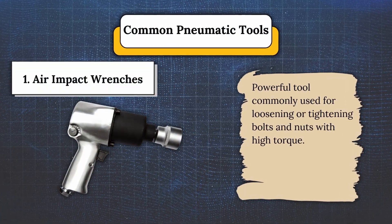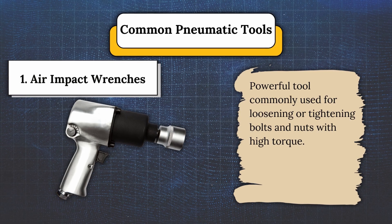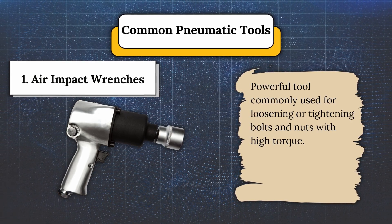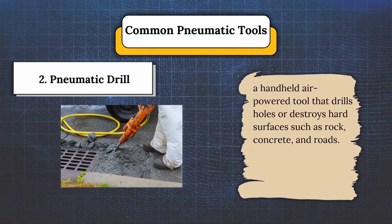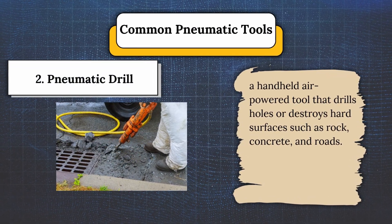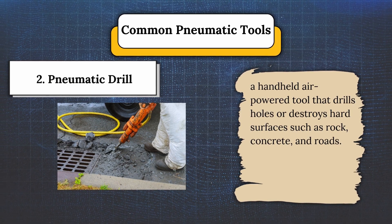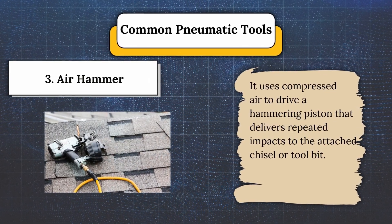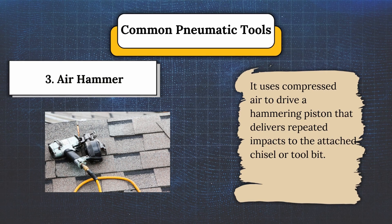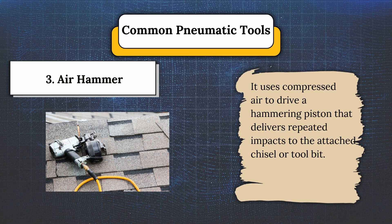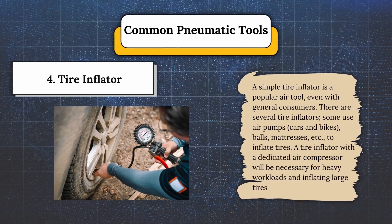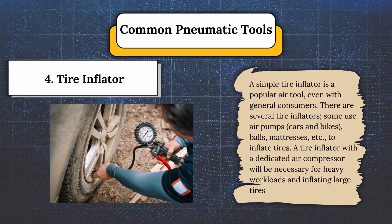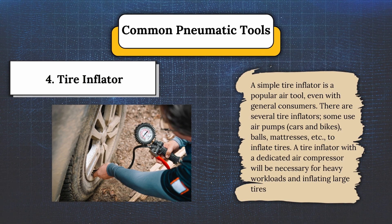For the common pneumatic tools. Number one, air impact wrenches — powerful tools commonly used for loosening or tightening bolts and nuts with high torque. Number two, pneumatic drill — a handheld air-powered tool that drills holes or destroys hard surfaces such as rock, concrete, and roads. Number three, air hammer — it uses compressed air to drive a hammering piston that delivers repeated impacts to the attached chisel or tool bit. Number four, tire inflator — a popular air tool used with air pumps for cars, bikes, balls, mattresses, etc., to inflate tires.